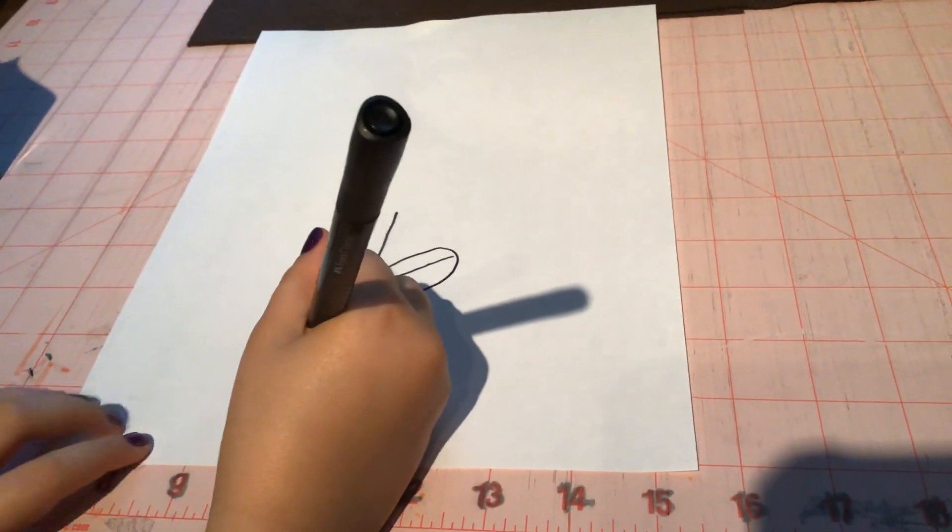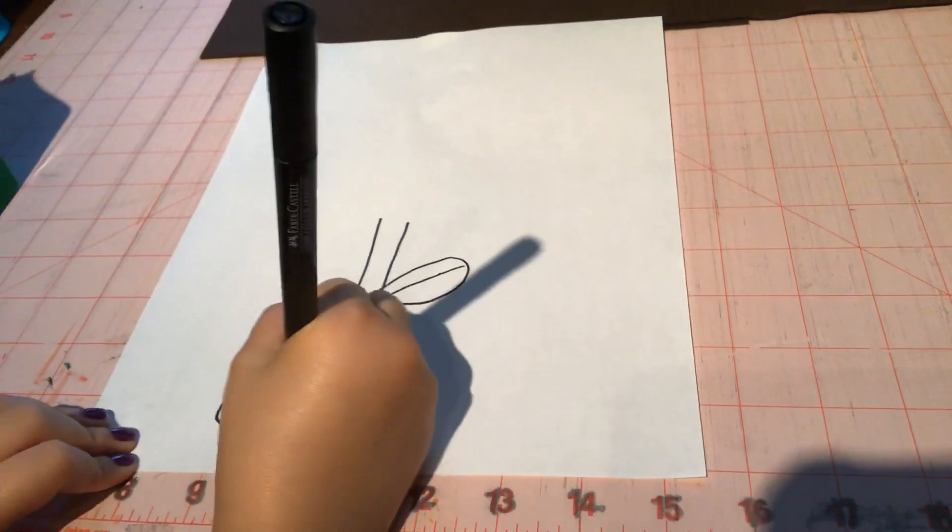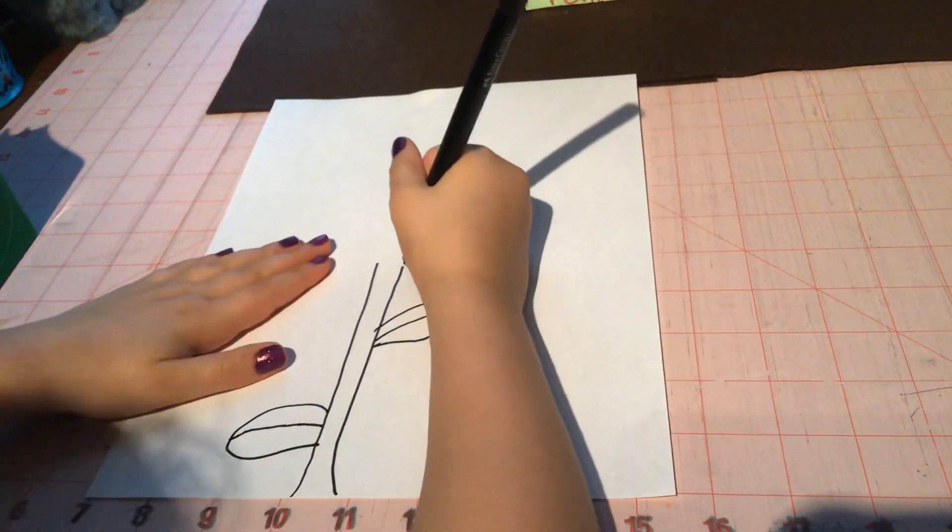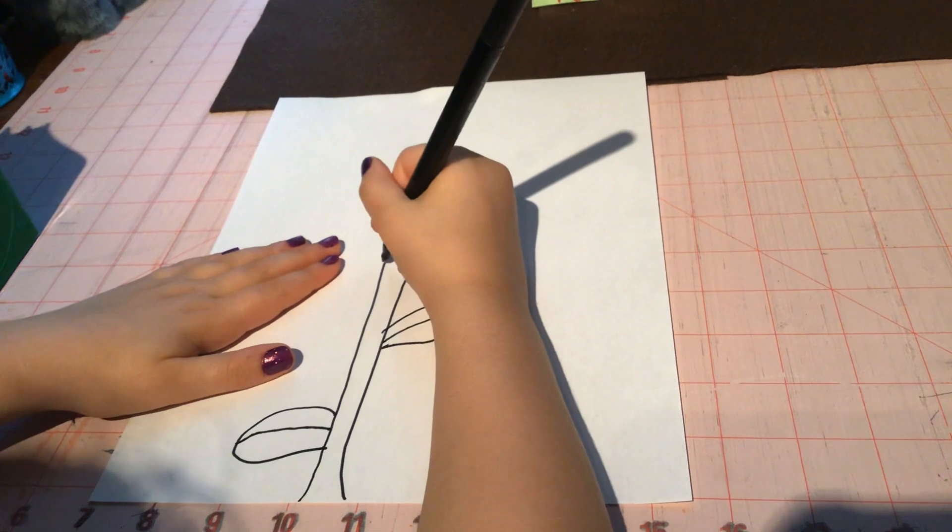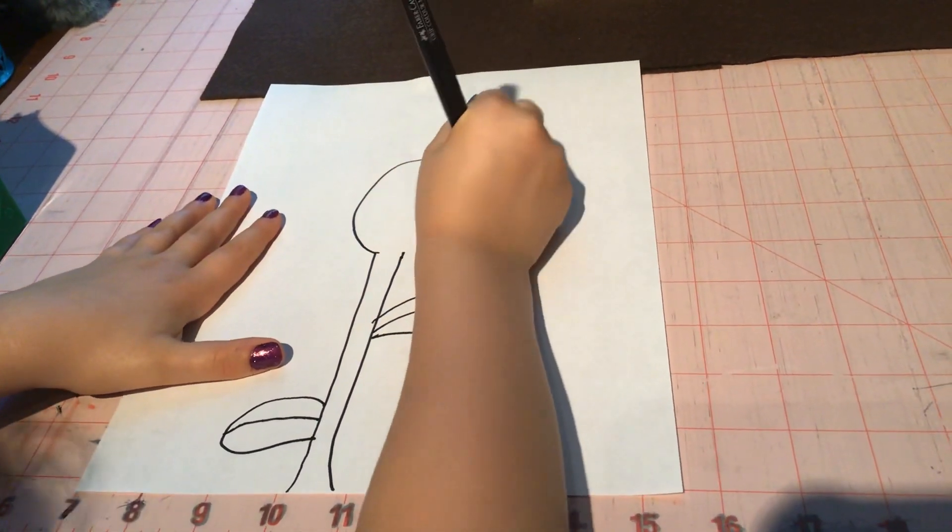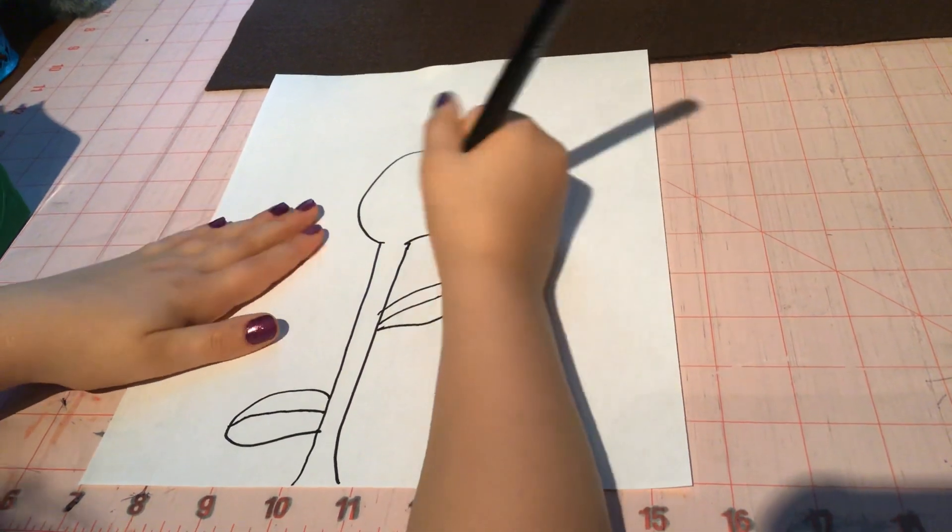Then you want to do it like by the bottom. Make a little circle. Make a line. And then you want to make like a circle, decent sized circle.